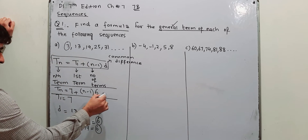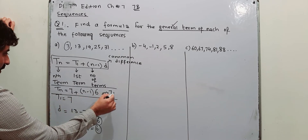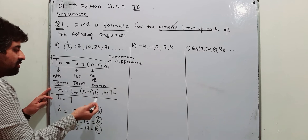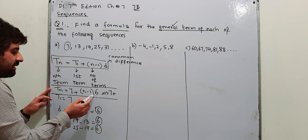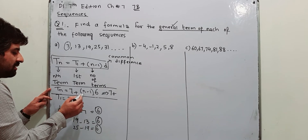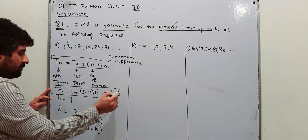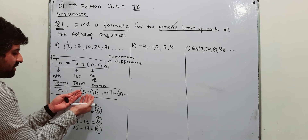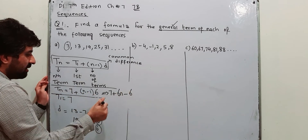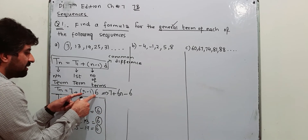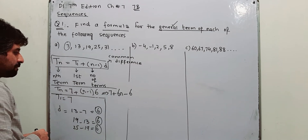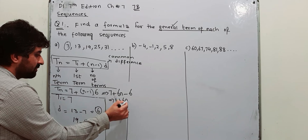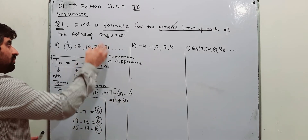You can do further simplification. Students often make a mistake here: 6 is being multiplied by the bracket, so 6 has to be multiplied by all the terms inside. 6 times n is 6n, and 6 times minus 1 is minus 6. So the expression becomes 7 plus 6n minus 6. Combining constants: 7 minus 6 is 1 plus 6n. This is the general term of this sequence.